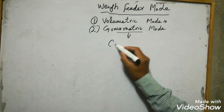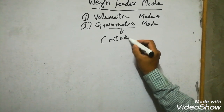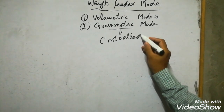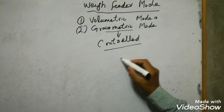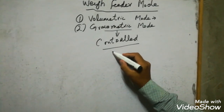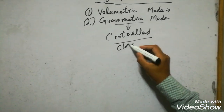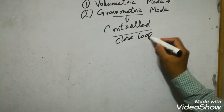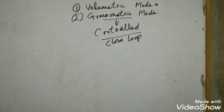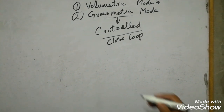Volumetric mode is used where the volume of feed material is always constant. It is mostly used for calibration — zero calibration and tare calibration. Gravimetric mode is also called controlled mode, or it is a closed loop control.